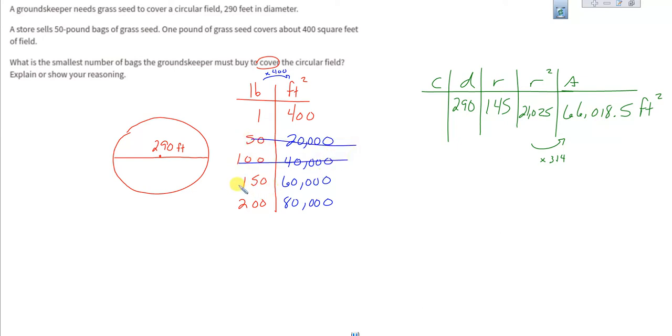Oh so close, but we got to buy that 200 pounds. So this would be like bag number one, bag number two, bag number three. We would have to buy that fourth bag to have enough to cover everything because the third bag is going to fall short by about 6,000 square feet.